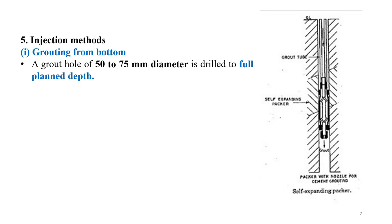Grouting from bottom: in this case, a grout hole of 50 to 75 mm diameter is drilled to the full plan depth. From bottom means we start grouting from the bottom, proceeding from bottom to top. The hole is drilled up to the final depth, then grouting starts from the bottom and proceeds till the ground level.